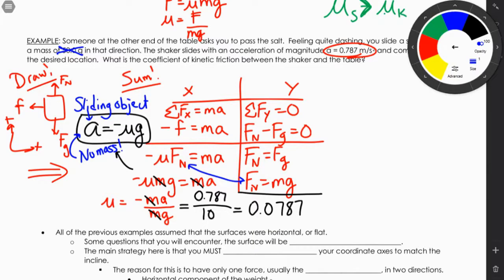From here, we're going to look at inclined planes — what happens when our surface is no longer horizontal but inclined, like a ramp.